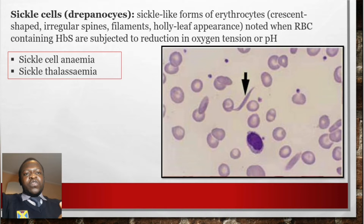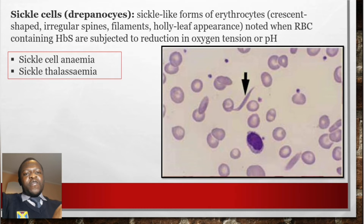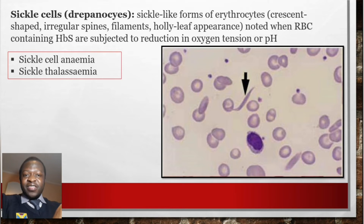Sickle cells are crescent-shaped erythrocytes with irregular spines and filaments, showing a holly-leaf appearance. They are seen when erythrocytes containing HbS are subjected to a reduction in oxygen tension or pH. Sickle cells are found in sickle cell anemia and sickle-beta thalassemia.